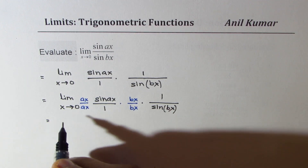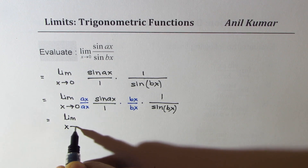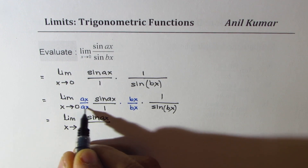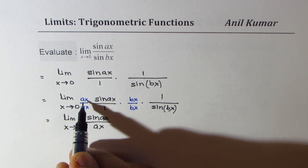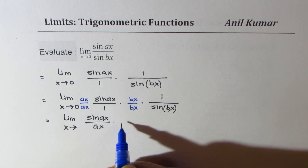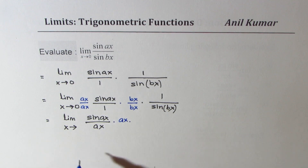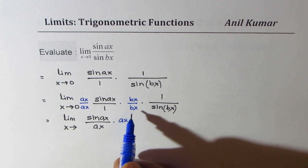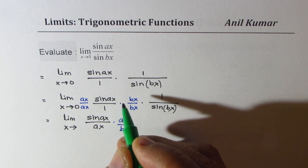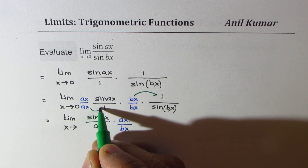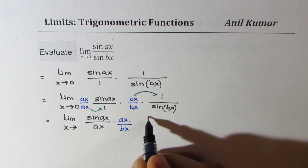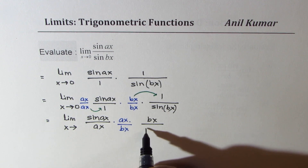Limit properties are being applied. We could write this as: limit x approaching 0 of sine ax over ax — we are left with that ax. We take the numerator bx, and placing bx over sine bx gives us that second term.